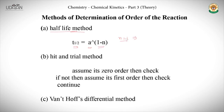In the case where N equals 1, T half is constant. And when T half is directly proportional to A, it means that N is equal to 0, meaning the reaction is zero order.